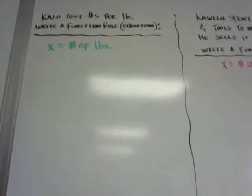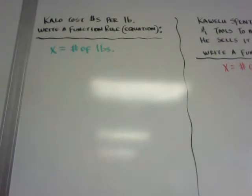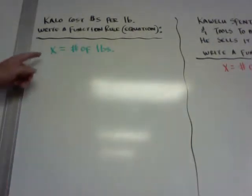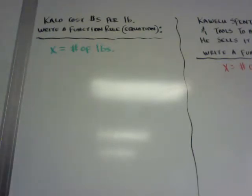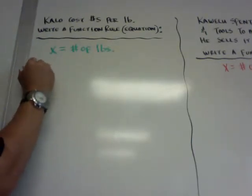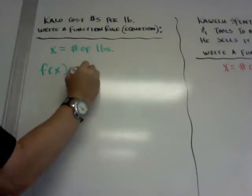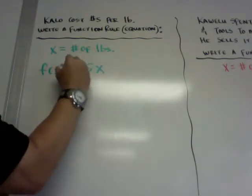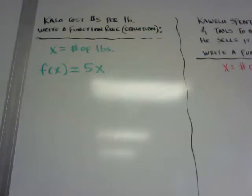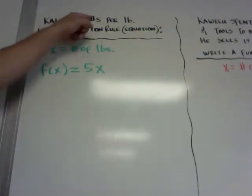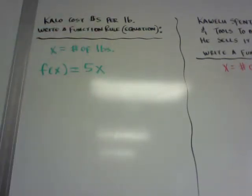The next part is doing word problems. So you can see here. If Kala costs $5 per pound, write a function rule or an equation. If x is equal to the number of pounds, you can just say f of x is equal to 5 times the number of pounds. And that's all it is. It's a pretty simple function rule. If it's $5 per pound, 5x, 5 times the number. That's going to be like your slope.